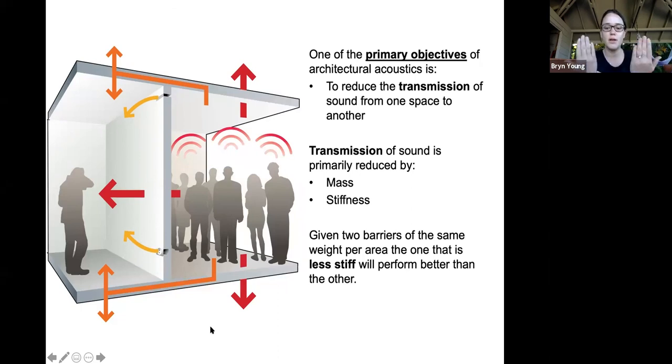Given if you have two barriers, two walls that are the exact same weight per area, the same mass, the same weight, the one that is less stiff will perform better than the other. And this is due to the sound bouncing again. If it's less stiff, there's more spaces for the sound to kind of get trapped essentially.